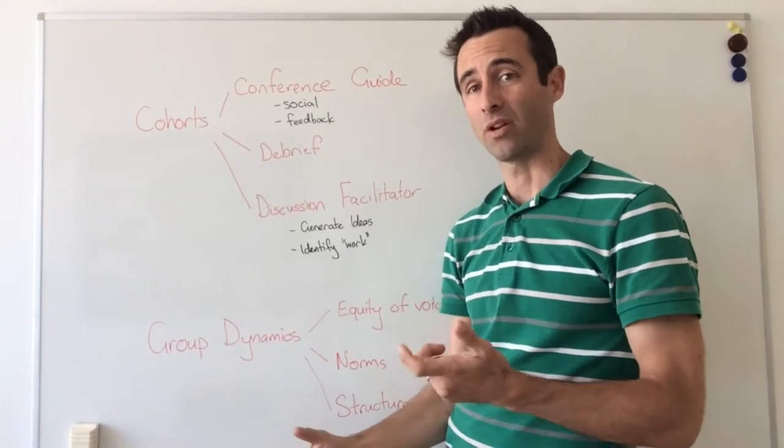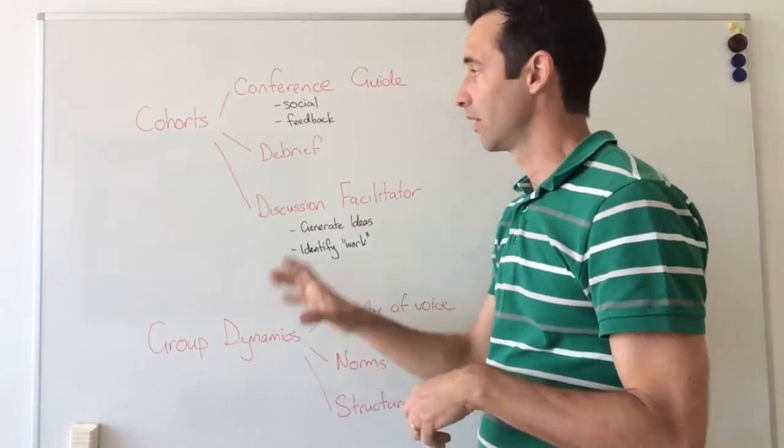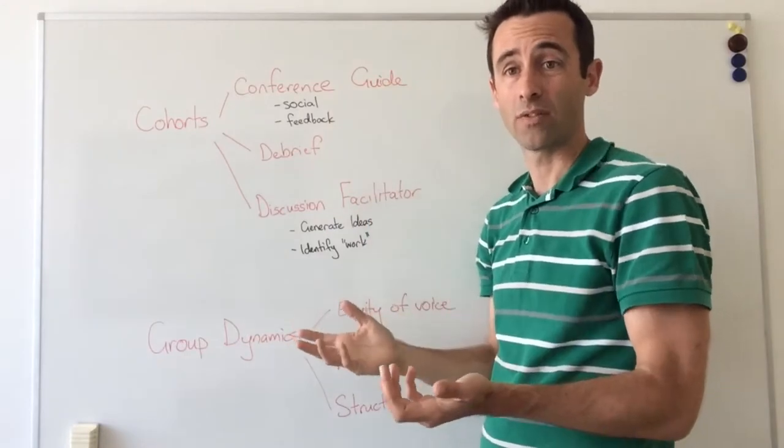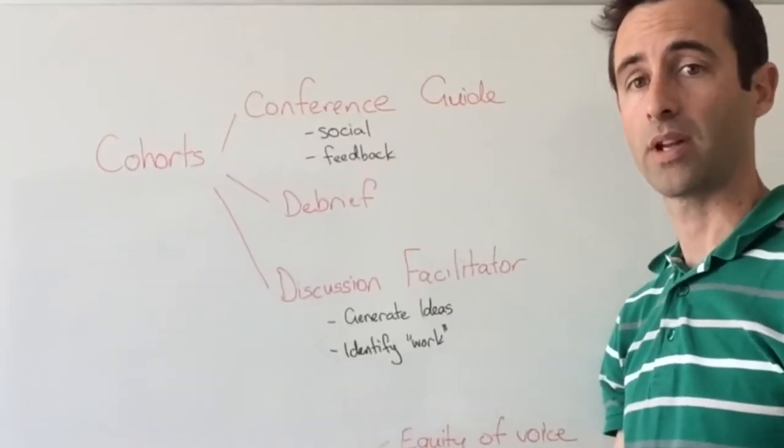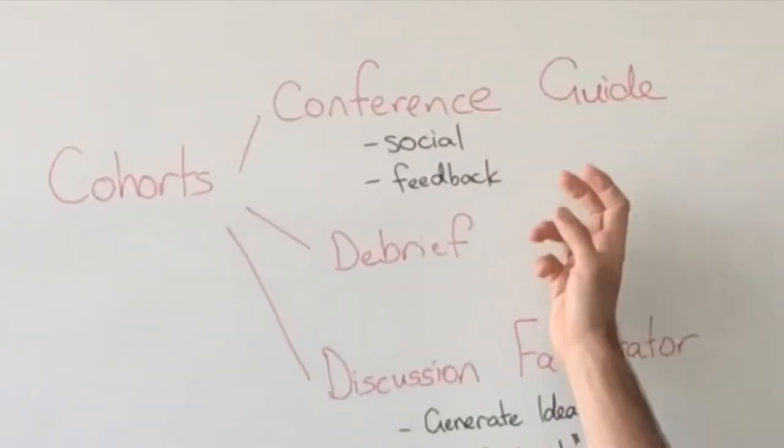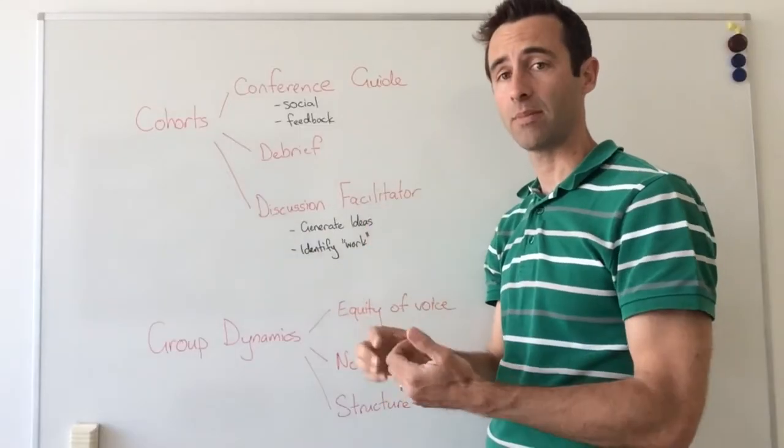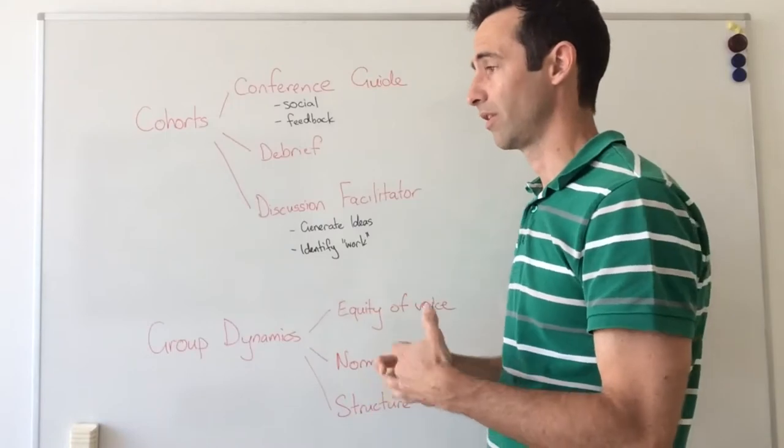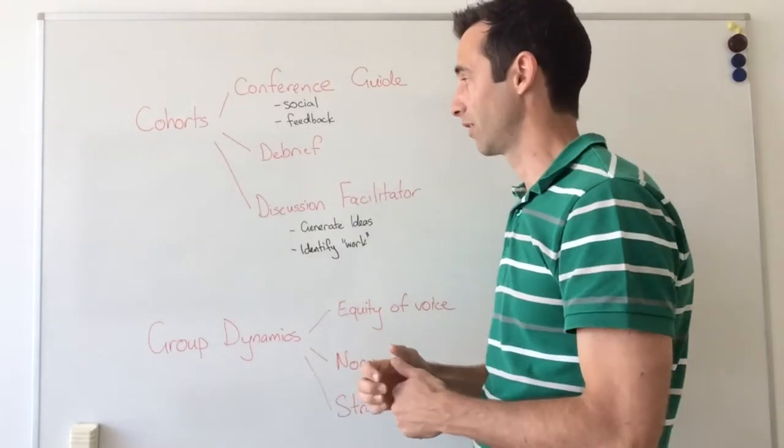I'm going to talk to you about being a Learning 2 cohort leader. I see the role as divided into three elements. The first one is being a conference guide, making sure people are connecting outside the conference socially, but also gathering feedback from the group about how the conference is going, which can feed back to the leaders of Learning 2.